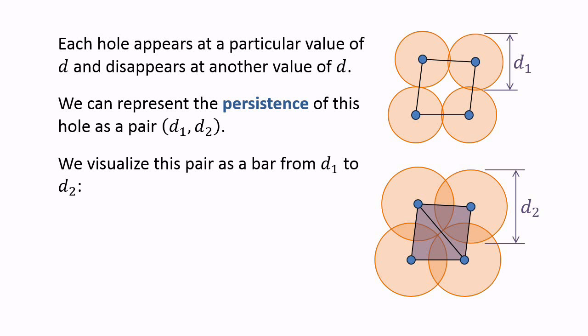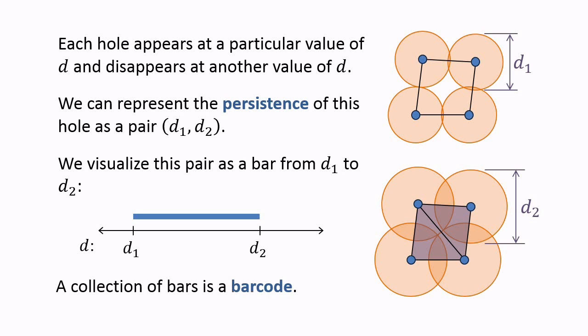We can also visualize this pair as an interval, or bar, from d1 to d2. This bar is a visual representation of the persistence of the hole. A collection of such bars is called a barcode, and barcodes are a central object of study in persistent homology.